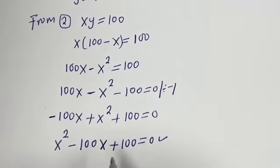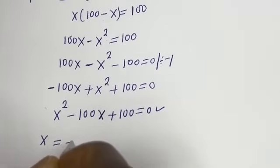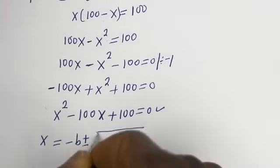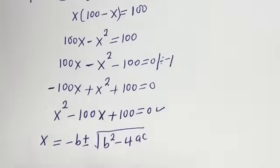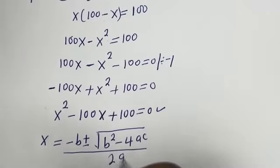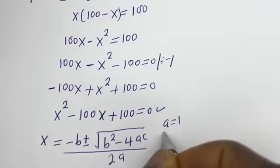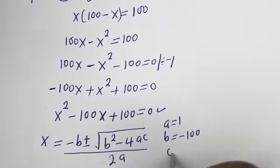This is a quadratic equation. Let's solve this using the quadratic general formula: x is equal to minus b plus or minus square root of b squared minus 4ac, all over 2a. From this equation, a is equal to 1, b is equal to minus 100, c is equal to 100.